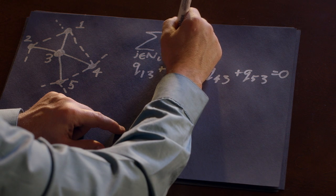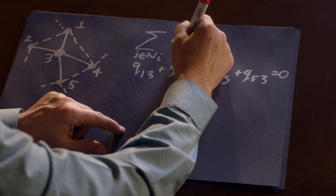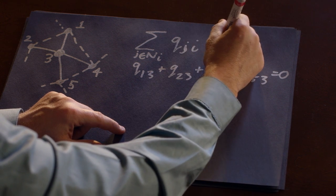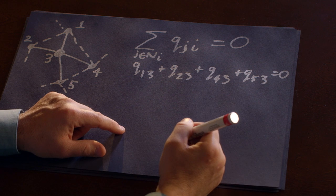the sum of the flows from j to i has to be equal to zero. That's always true.